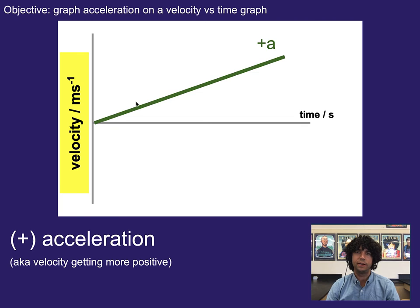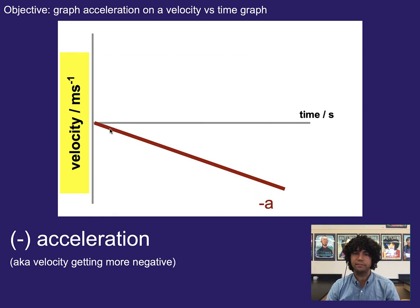Here, we've got a graph showing positive acceleration because we can see the velocity is increasing with time. Here, we show a graph with negative acceleration because we can see the velocity is getting more and more negative with time.